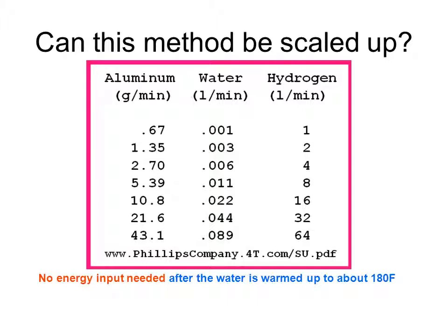This scale-up process continues without adding additional heat to the process. So it's unlike electrolysis—with electrolysis, if you want more hydrogen you've got to put more current and more power into the process. Here that's not true. If you want more hydrogen you just add more aluminum surface area and more water, and you can get more hydrogen without putting any more power into the process. No energy input is needed after the water is warmed up to about 180 degrees Fahrenheit.